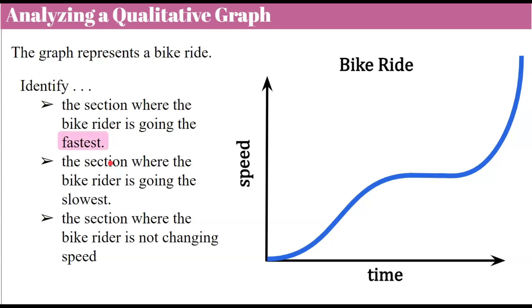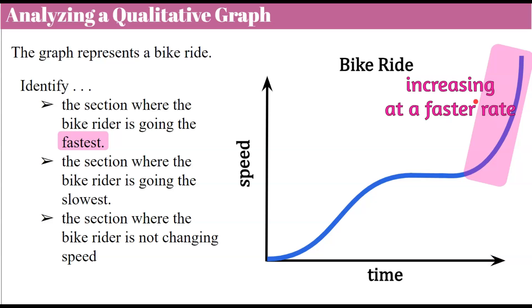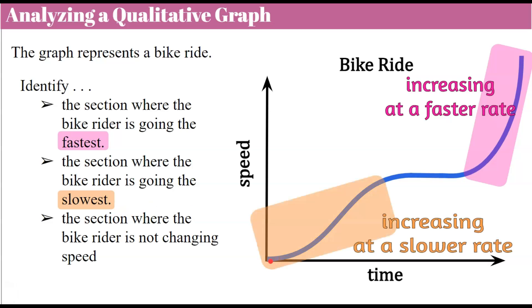Welcome back. Let's begin by reviewing the section that shows the fastest. Because this represents speed, we're looking for the steepest part of the graph — this is the part that is increasing at a faster rate because the steepness of the line is the greatest. The section where the bike is going the slowest is the one that's less steep — it's increasing, but at a slower rate. We can see more time has elapsed for speed to go from one point to another in that section.